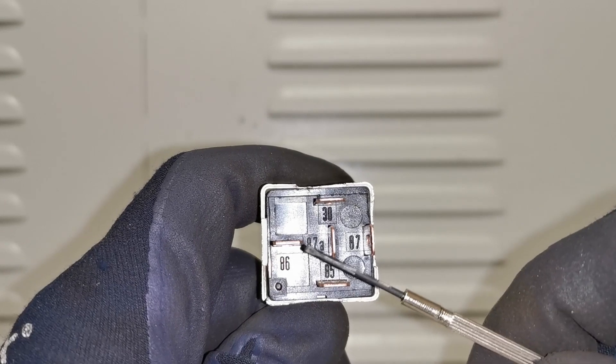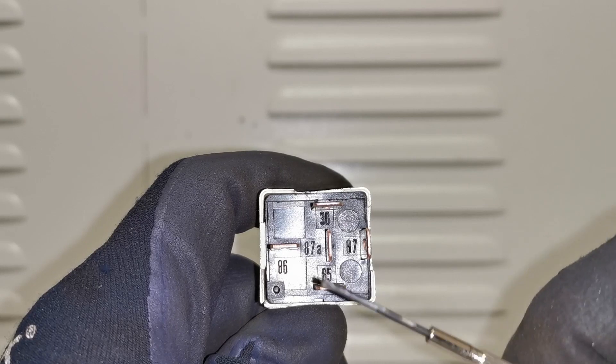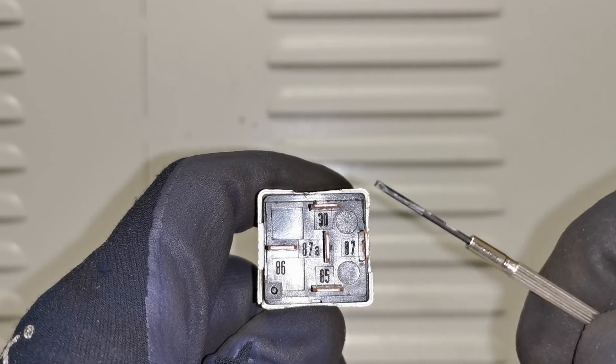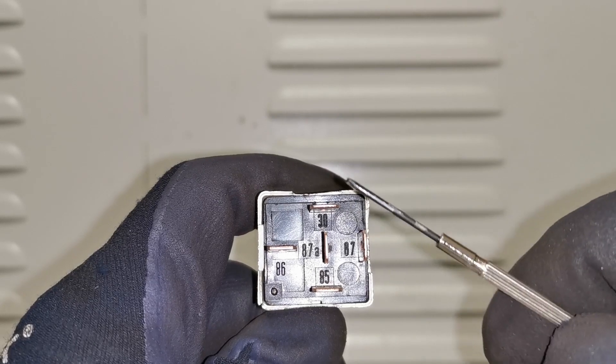85 and 86 is the control side so in the test that is the one where you're connecting up to the battery. 30 and 87 is the output side of the relay.